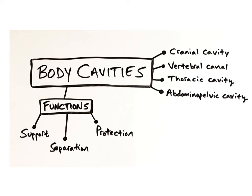The body is divided into a variety of internal spaces called body cavities that provide important functions to the internal organs, including support, separation, and protection. In this video, we'll focus on the major body cavities, such as the cranial cavity, the vertebral canal, the thoracic cavity, and the abdominal pelvic cavity.